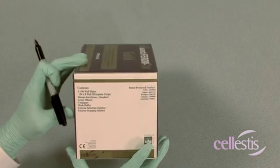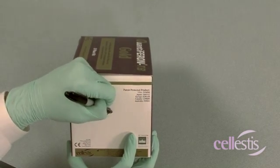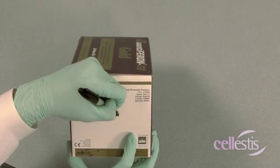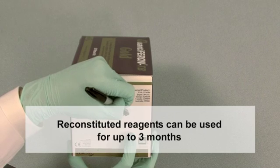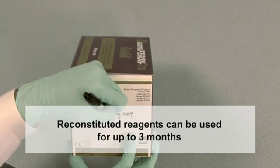It is good practice to write the date of reconstitution on the ELISA box. Reconstituted reagents can be used for up to three months from this date.